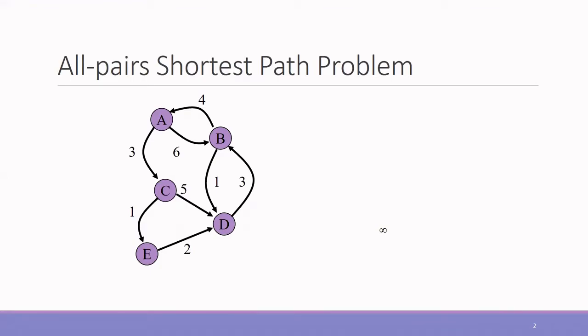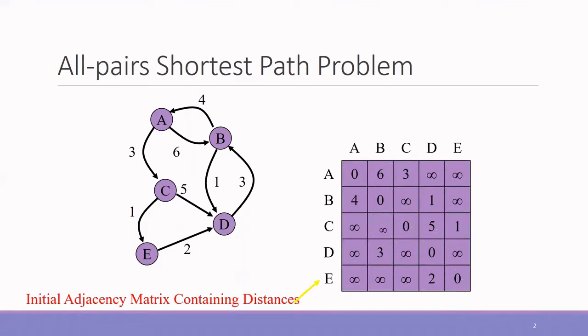As a first step, what we do is we construct an adjacency matrix. The rows will be nodes and the columns will be also nodes. So every cell represents the distance between the row and the column node. Here you can see that the infinity represents a higher value where there is no direct edge from any node to that particular node.